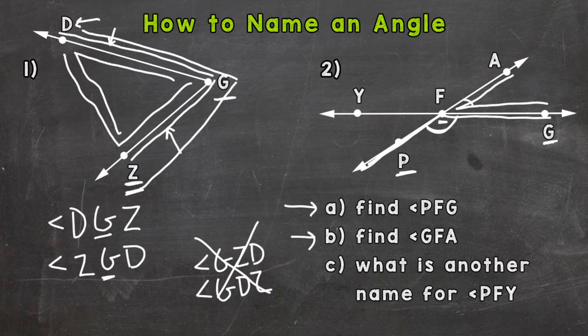And then lastly, C: what is another name for angle PFY? So PFY would be right here—P, F, Y. Another name, as long as we have the vertex in the middle, we could do YFP—angle YFP.